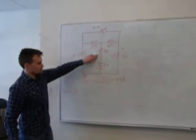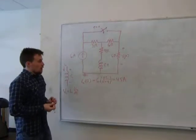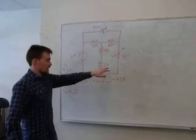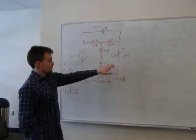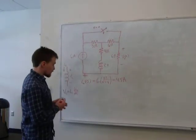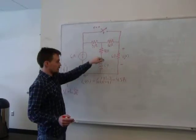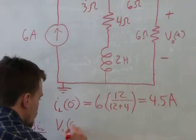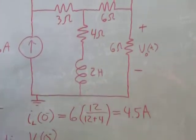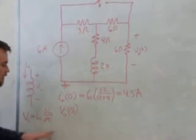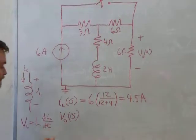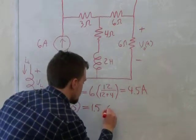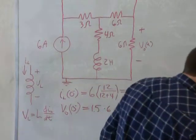That is going to equal 4.5 amps. That's our initial value of the current through the inductor. Since the current through here and the current through here have to add up to 6 amps, we can find an initial value for this voltage. The initial value for this voltage is the current through this branch times the resistance, and the current through the branch is equal to 6 minus 4.5, so that's 1.5 amps. The voltage V-nought right before time equals zero is equal to 1.5 amps times 6 ohms, which equals 9 volts.